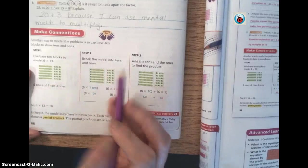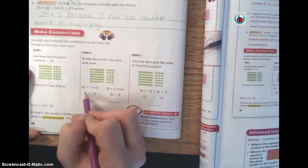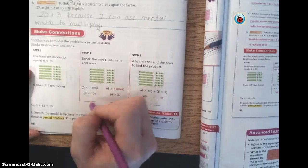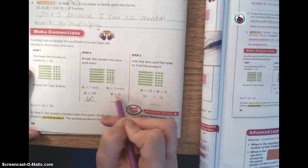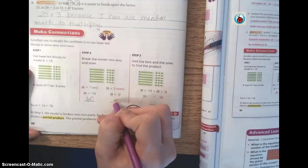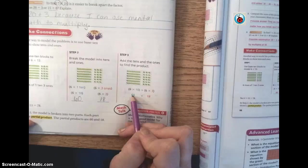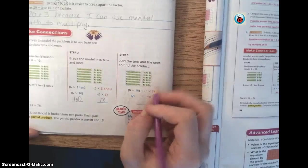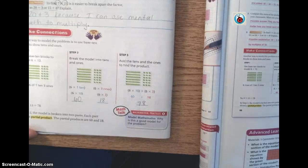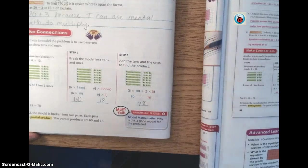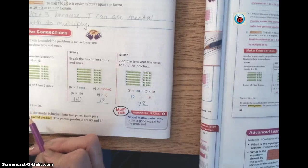Break apart this model into tens and ones. 6 times 1, 10 would be 6 times 10. And 6 times 10 is what class? 60. 6 times 3 ones would be 6 times 3. And 6 times 3 is what class? 18. So then you would take 60 plus 18 and get what? 78. 78 again. There's once again, another way to model this problem. So 6 times 13 is 78.